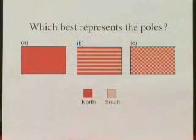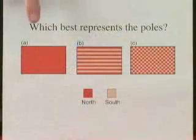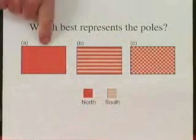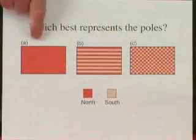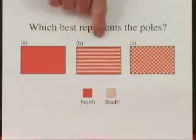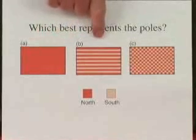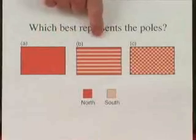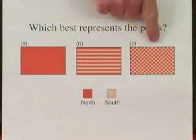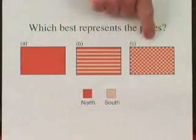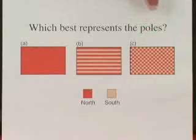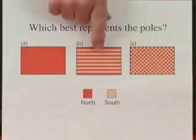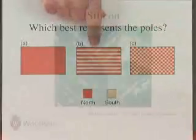Now, one of the possible patterns is the same pole all over the surface, or it might have alternating poles in this stripe pattern that we see here, or it might be checkerboard. The question is: which is the correct response? If you say that it is the stripe pattern, you are correct.